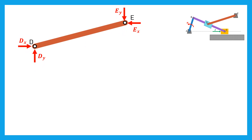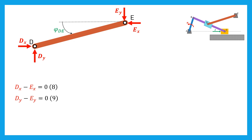Next, let's consider the bar DE. Assuming the angle of the bar DE with the horizontal line is phi_DE, the horizontal equilibrium writes: DX minus EX equals zero. The vertical equilibrium writes: DY minus EY equals zero. And the moment equilibrium about E writes: DE·sin(phi_DE)·DX minus DE·cos(phi_DE)·DY equals zero.